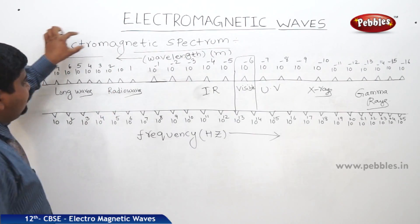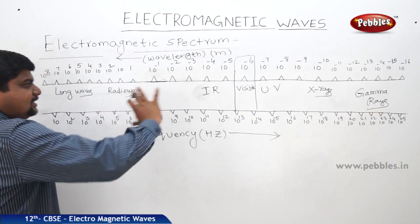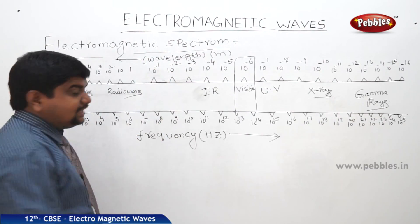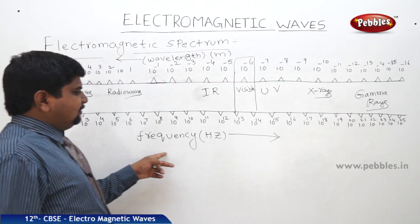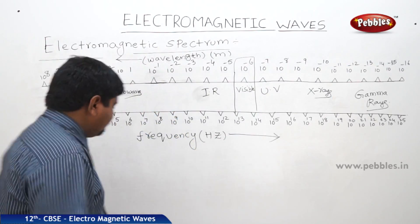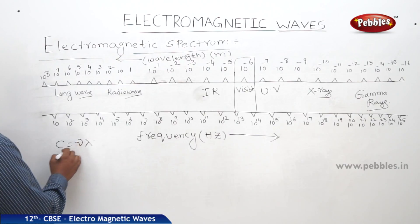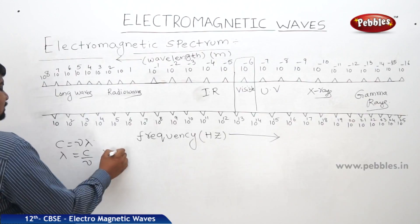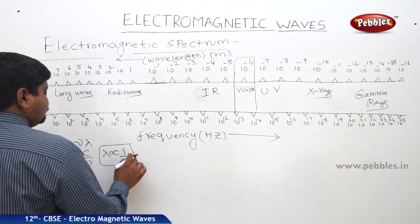We will discuss about the electromagnetic spectrum. This is a diagram which explains the relationship between wavelength and frequency. Wavelength is in decreasing order and frequency is in increasing order. We know that c = νλ, so λ = c/ν, meaning lambda is inversely proportional to frequency.